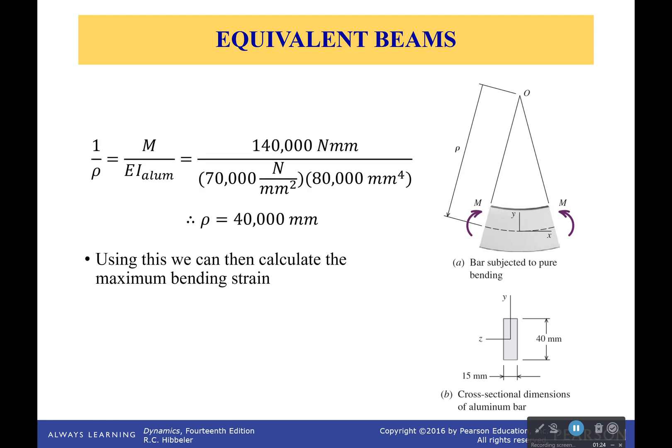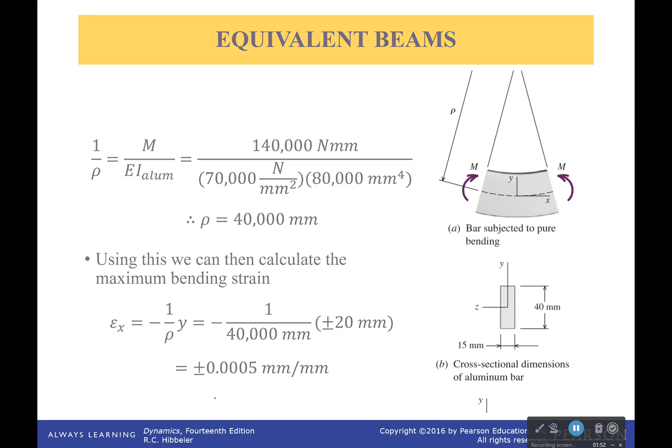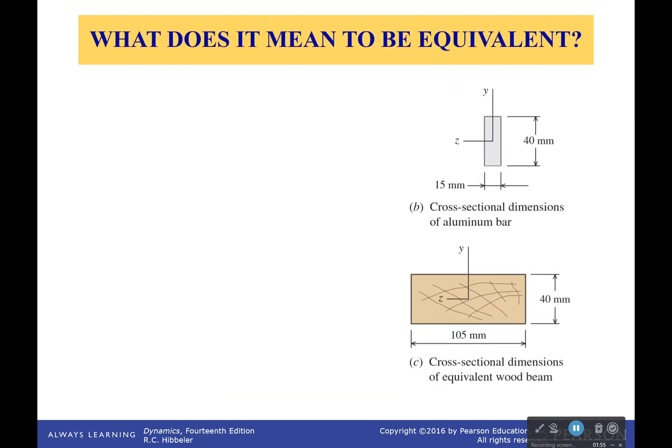Okay, so using this we can then calculate the maximum bending strain. Notice I said strain, not stresses. Strain. So if we do that using our radius of curvature, we'll find that the maximum bending strain is going to be either plus or minus 0.0005 millimeters per millimeter. Okay, now this is important. This is important because it's one of the things that we have to keep constant for an equivalent beam.